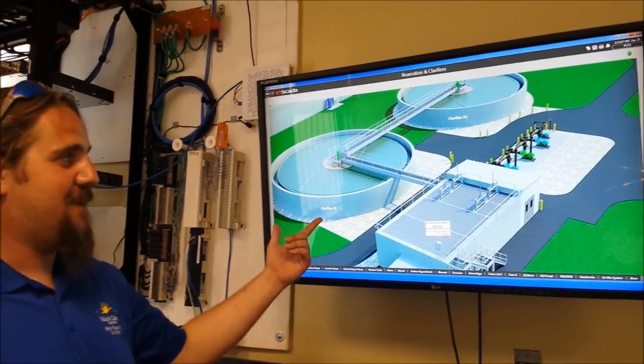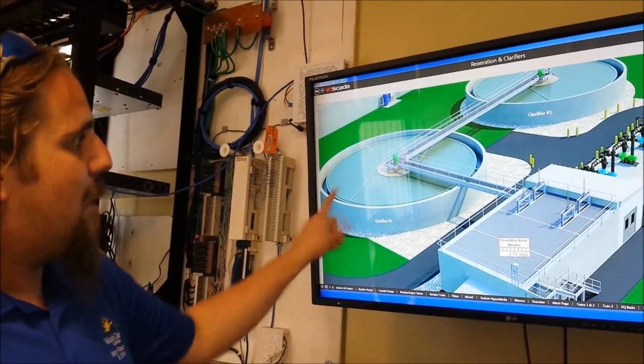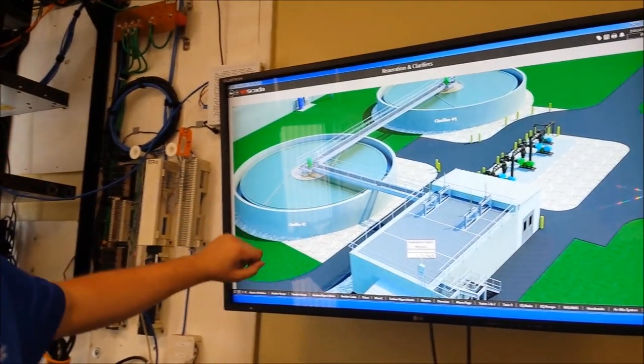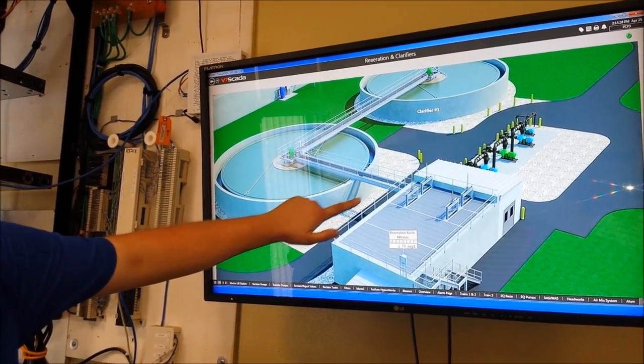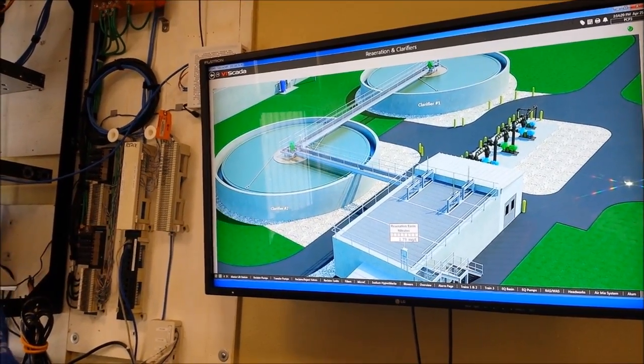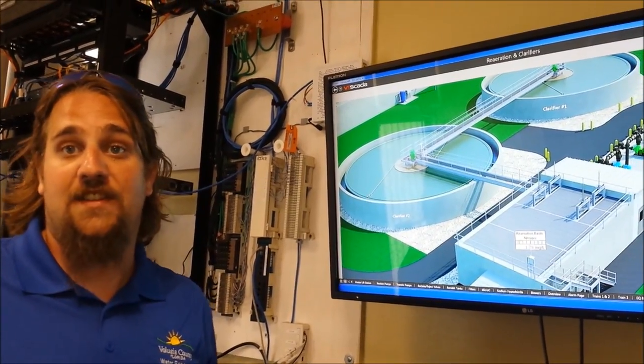So here we have the clarifiers. Everything that has been treated in the Bardenfo zones ends up coming right here. And the sludge blankets actually settle in these circular tanks in the very bottom. And we actually monitor how deep the sludge blankets are, and that indicates how effective our process is running.